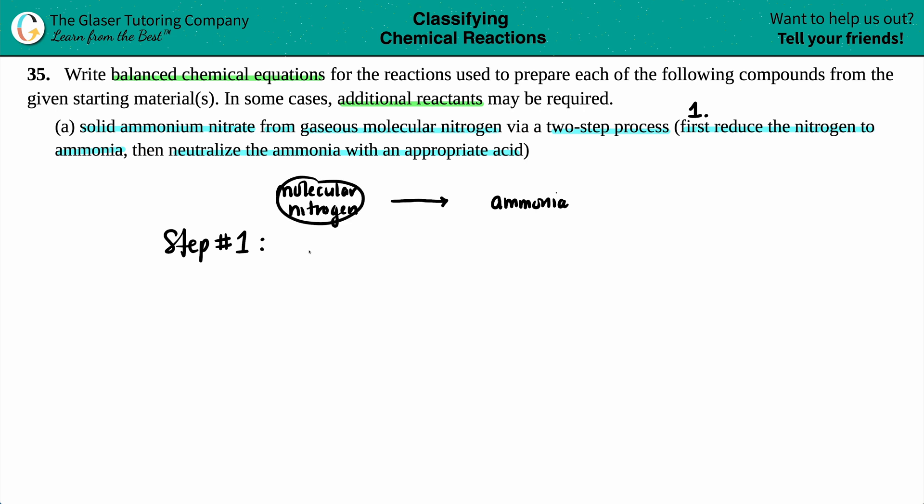So at least they gave us a couple of hints here. We know that we're starting with nitrogen and we're going to go to ammonia. So let's do step number one. Hashtag number back in my day. So step number one. Now, we're going to reduce the nitrogen. And they did tell us that it's coming from gaseous molecular nitrogen. So we have molecular nitrogen. And we're going to go to ammonia.